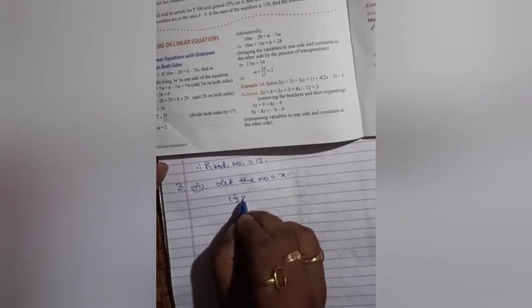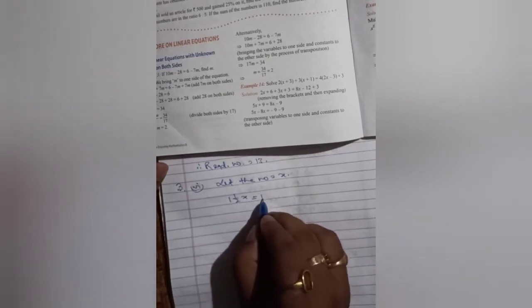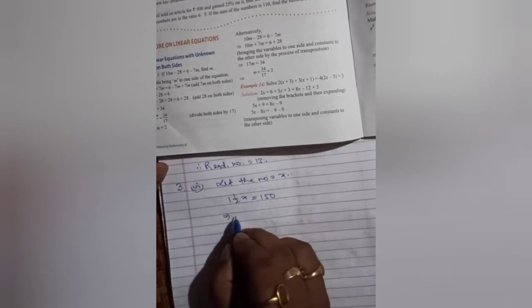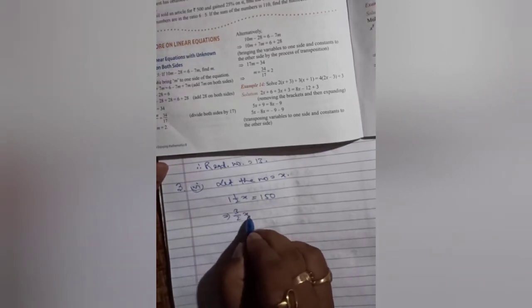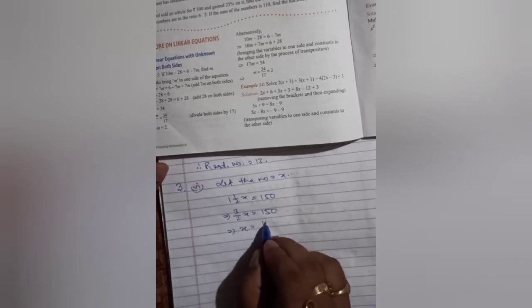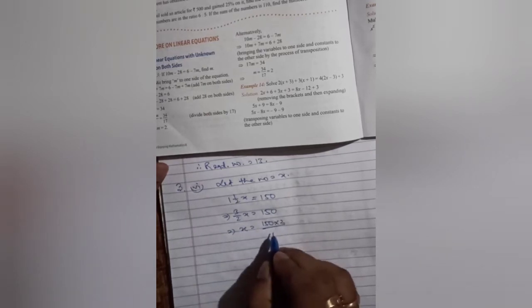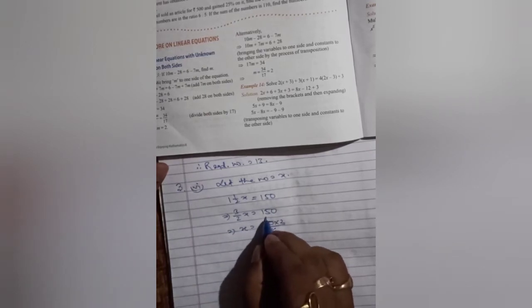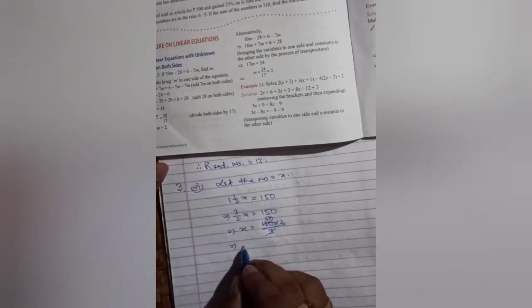Now number six: one and half times a number is 150. Let the number be x. One and a half times x equals 150. 3 by 2 x equals 150. So x equals 150 into 2 by 3. x equals 100.